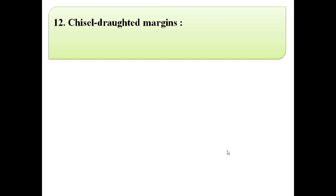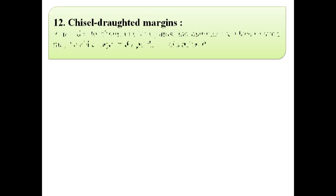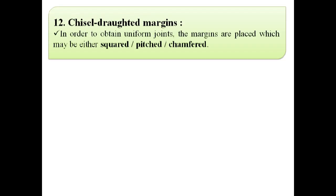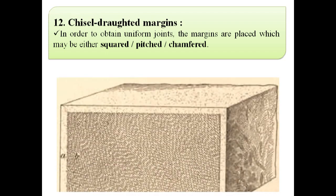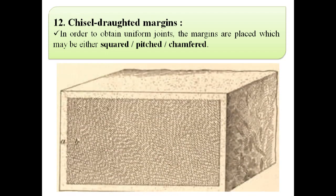The next finish is chiseled rotted margins. In order to obtain uniform joints, margins are placed which may be either squared, pitched, or chamfered, as shown in this image.